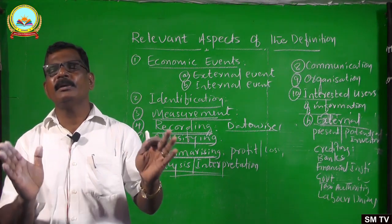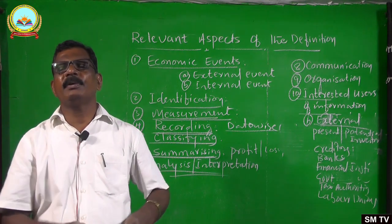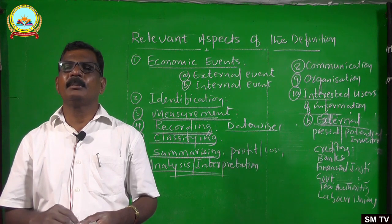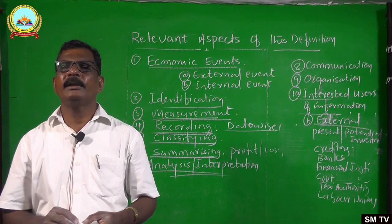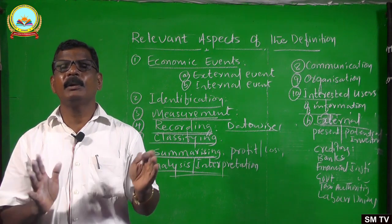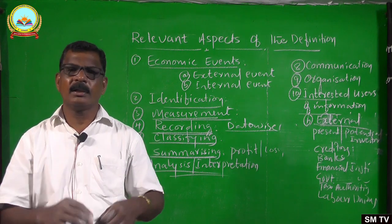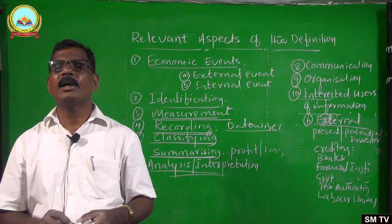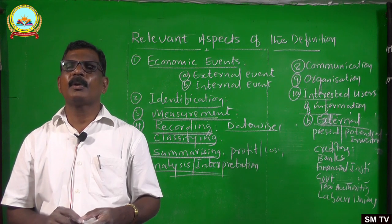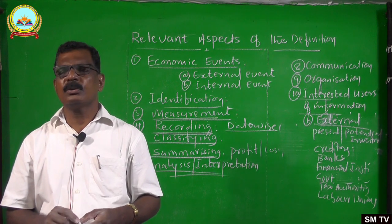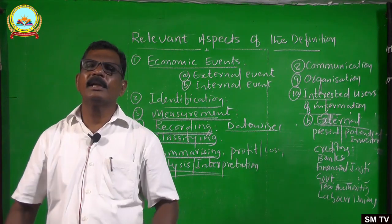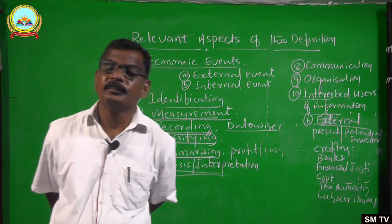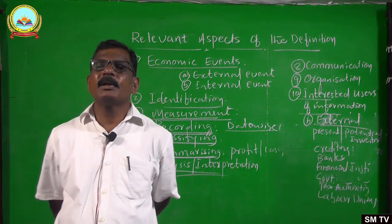Government also wants to know — it is compulsory from the point of view of the business to submit financial statements to the government. Tax authorities want to know whether the tax paid by the business organization is correct or not. Labor unions want to know — they can bargain with the business organization if the profits of the business are more. All these external parties are interested in the financial statements and financial information.